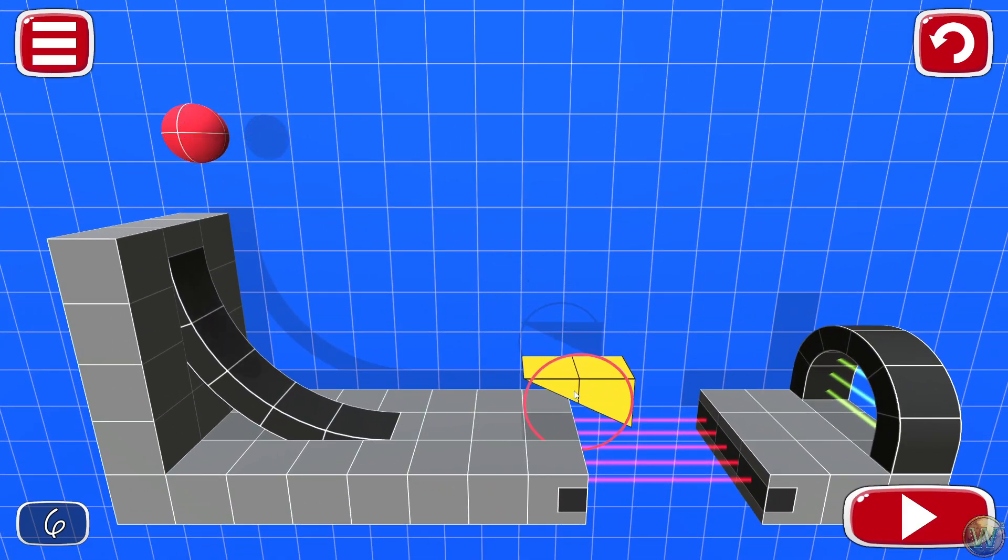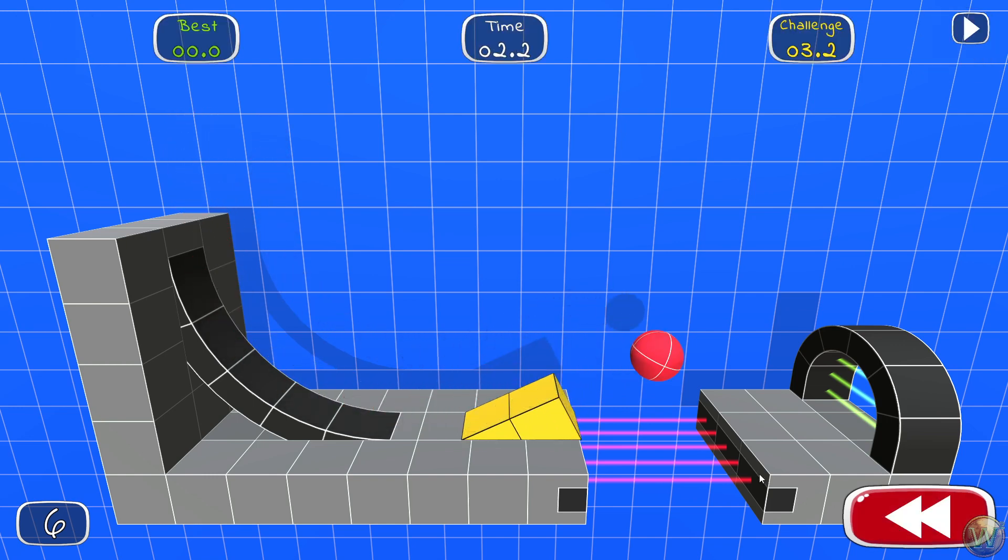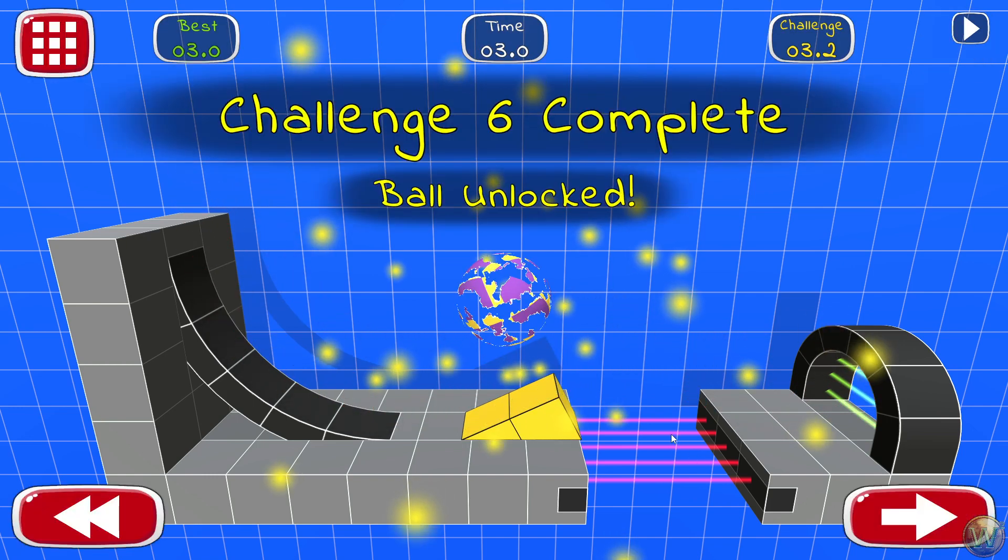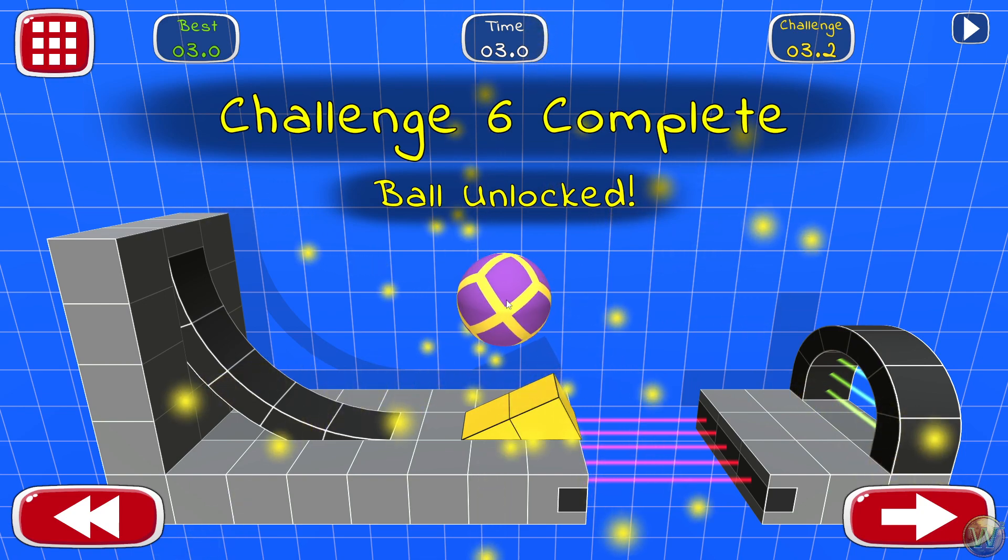I guess do it like this to make it fall and then jump that ramp like this. That'll do it. Oh, new ball unlocked.